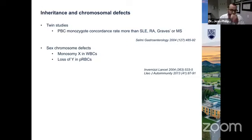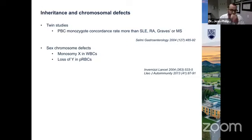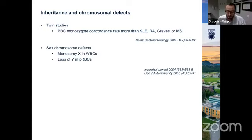Before I get to the geography, I want to touch upon inheritance. Using the gold standard of identical twin studies, PBC actually has a fairly high monozygote concordance rate — higher than other autoimmune conditions that also have inheritable factors, such as lupus, rheumatoid arthritis, and multiple sclerosis. There are also increased chromosomal defects in PBC patients, such as loss of the Y chromosome in red blood cells, and sometimes the presence of just one X chromosome in females in white blood cells. We don't know why this is happening, but it's interesting to point out.